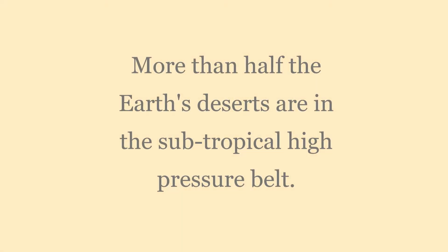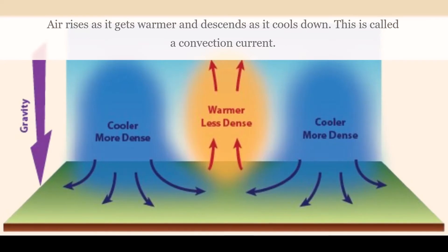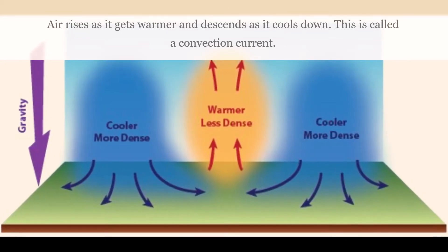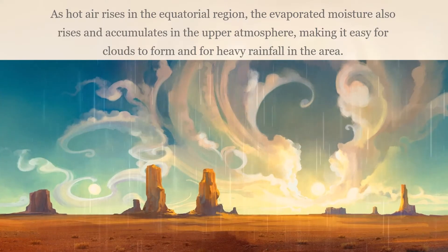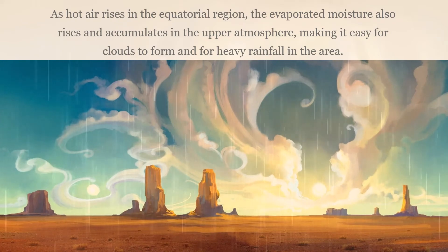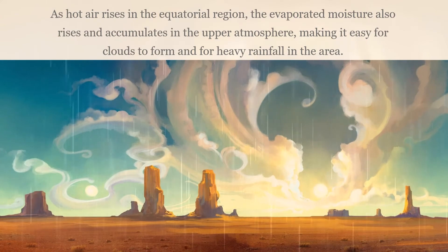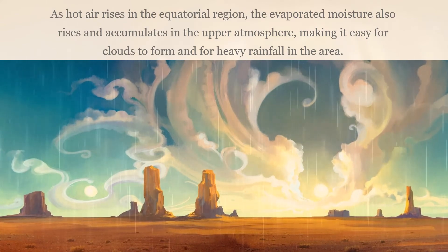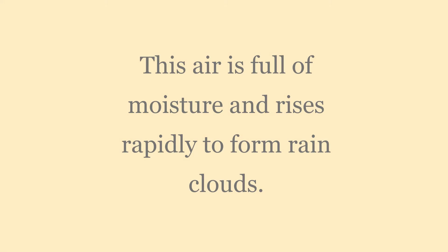More than half the Earth's deserts are in the subtropical high pressure belt. Air rises as it gets warmer and descends as it cools down — this is called a convection current. As hot air rises in the equatorial region, the evaporated moisture also rises and accumulates in the upper atmosphere, making it easy for clouds to form and for heavy rainfall in the area. This air is full of moisture and rises rapidly to form rain clouds.